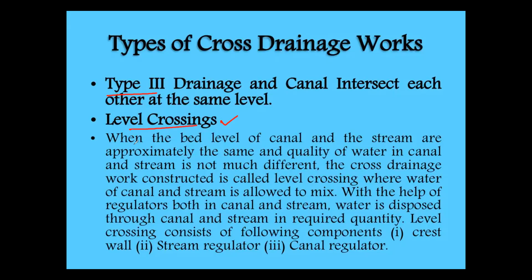The first structure is the level crossing. The bed level of the canal and the stream are approximately the same, and the quality of water in the canal and stream does not differ much. In this case, the cross-drainage work constructed is called a level crossing, where the water of the canal and stream is allowed to mix with the help of regulators.